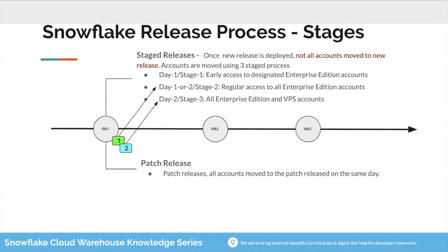There are three stages in the release process, and not all releases move to all accounts at once. On day one, stage one, early access is given to designated Enterprise Edition accounts — all accounts with Enterprise Edition or higher that have opted in for early release access.